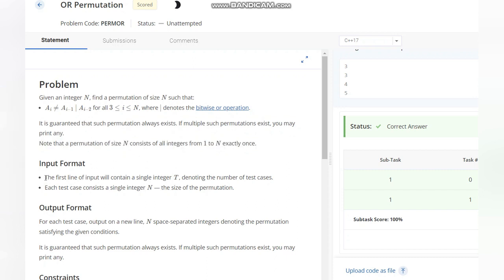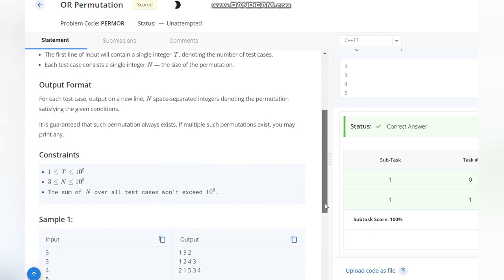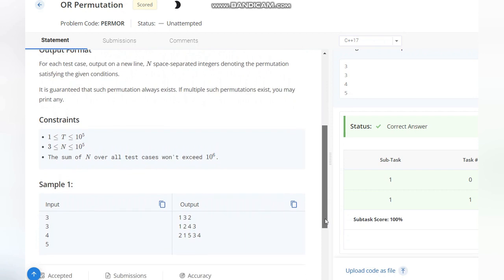We have input as n, the size of the permutation. We need to output n space-separated integers denoting the permutation satisfying the conditions. It is guaranteed that such permutation always exists. If multiple such permutations exist, you may print any.